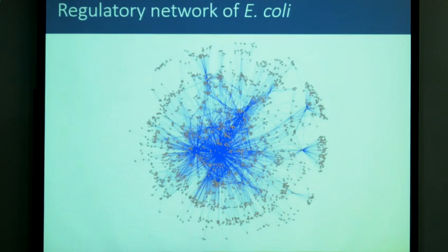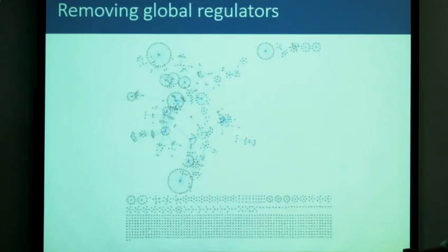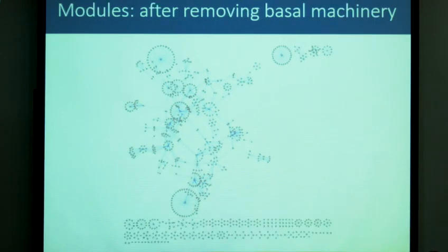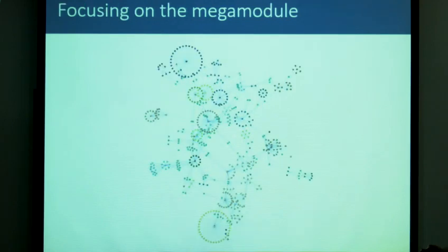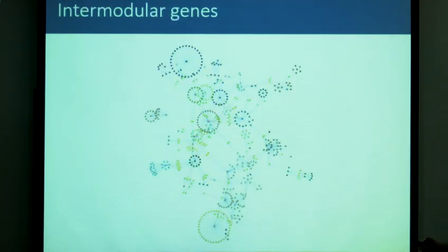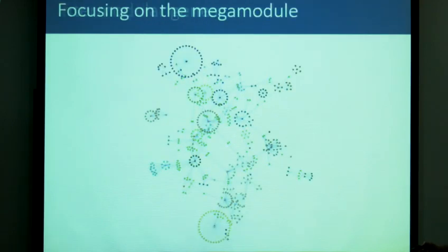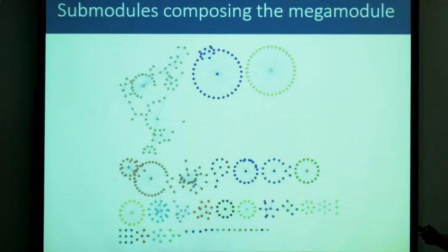Using real data — this is the E. coli regulatory network — if we remove the global regulators, we see the basal machinery with the connecting components, modules, and the large connected component. We identify the intermodular genes, remove them, and found a set of submodules. This is real data from the E. coli regulatory network.